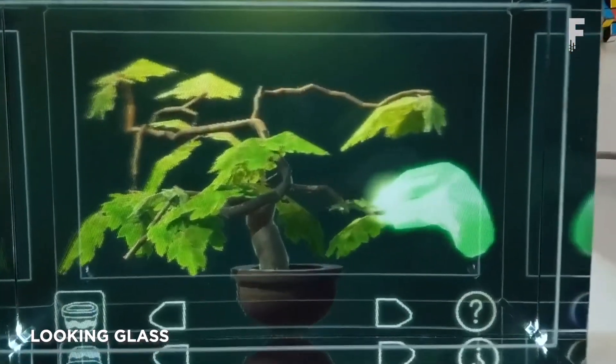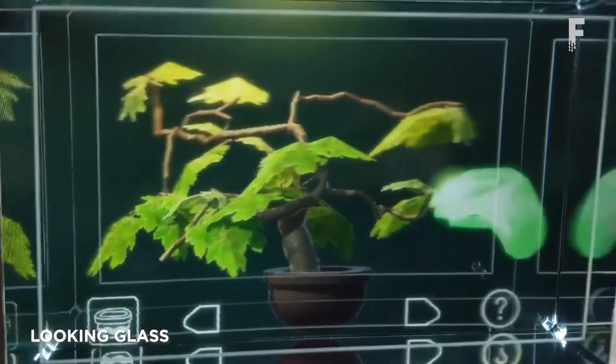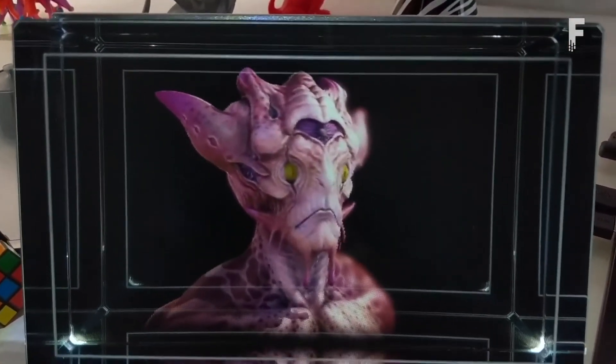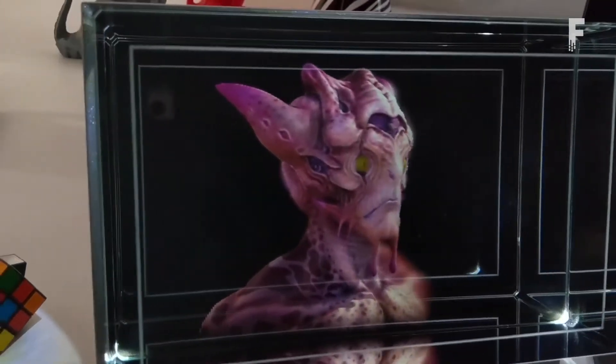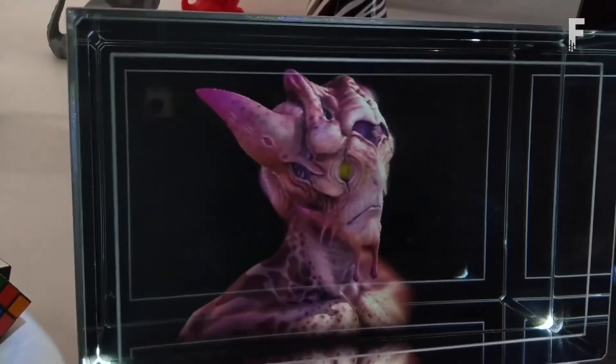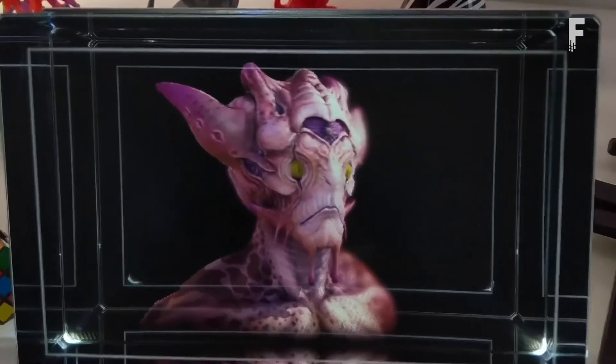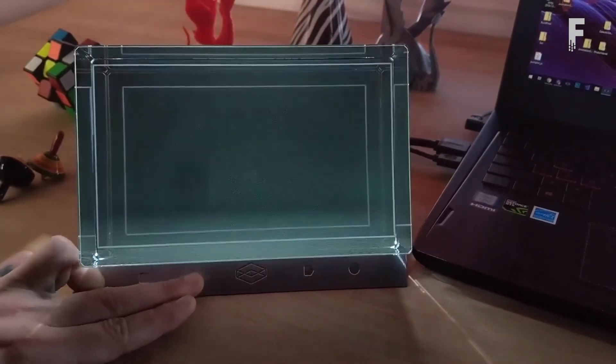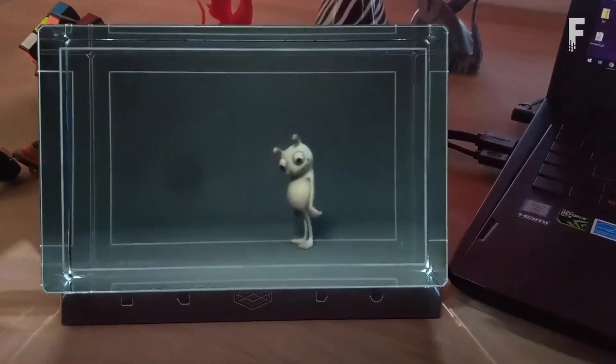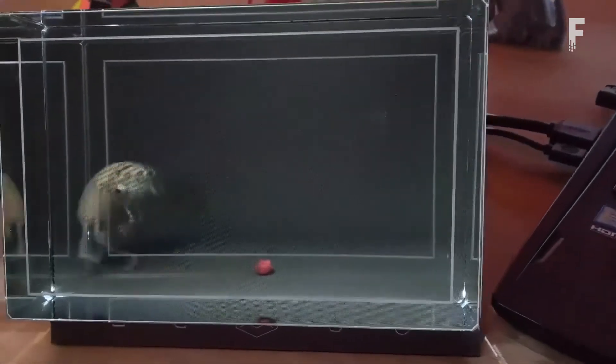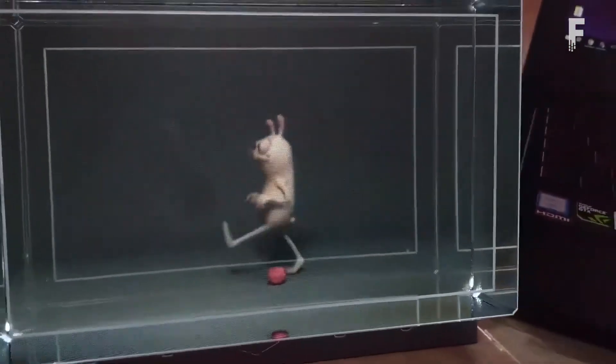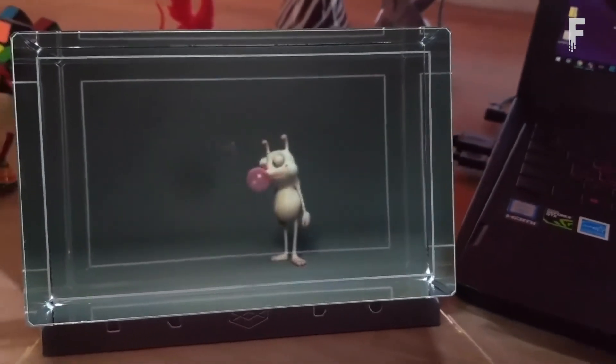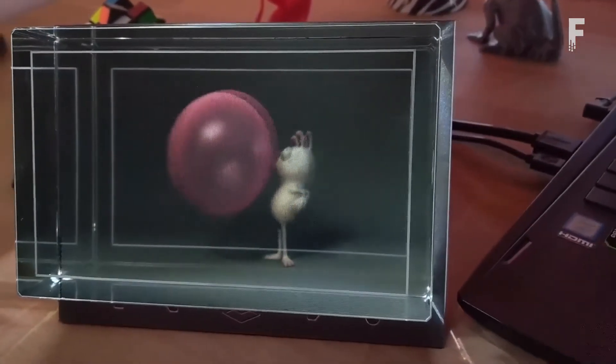Looking Glass Portrait is a portable standalone device that displays holographic photos, videos, and 3D models in a 58-degree viewing cone. It uses a proprietary combination of light field and volumetric display technologies to refract and project light to multiple parts of the screen simultaneously to display 3D images. The portrait has a 7.9-inch display at high resolution with HDMI, USB-C, and 3.5 stereo audio jack ports.